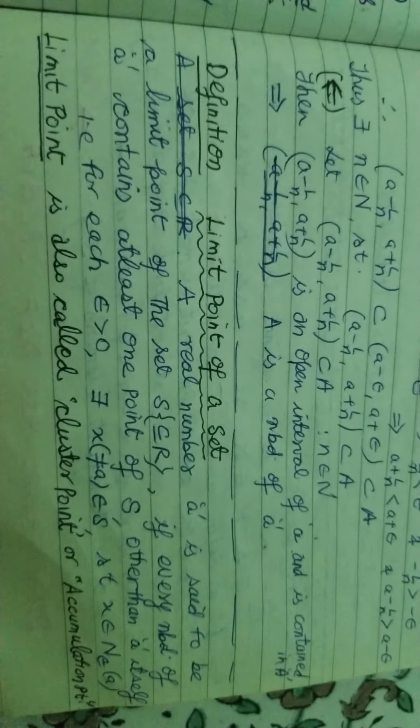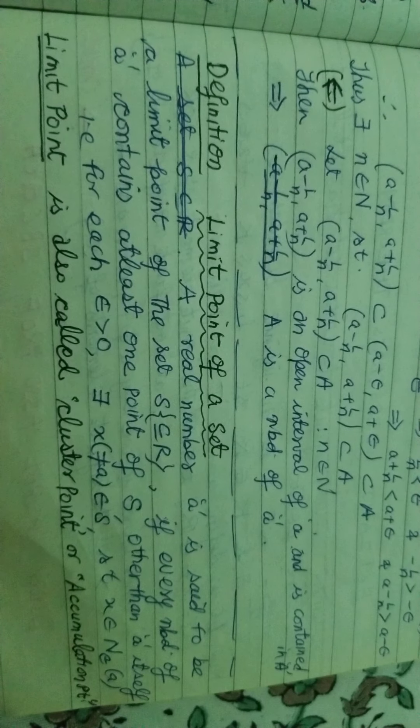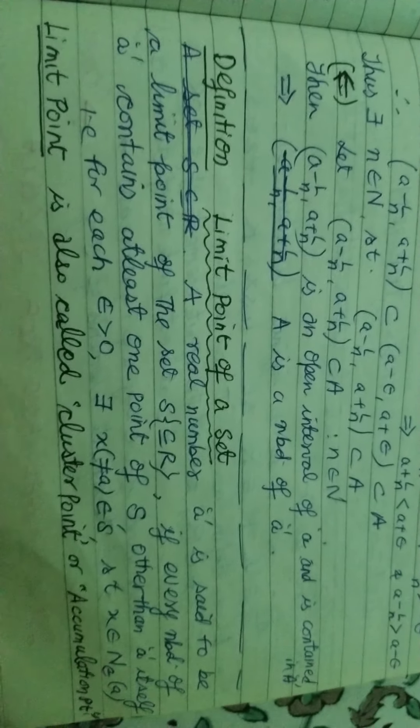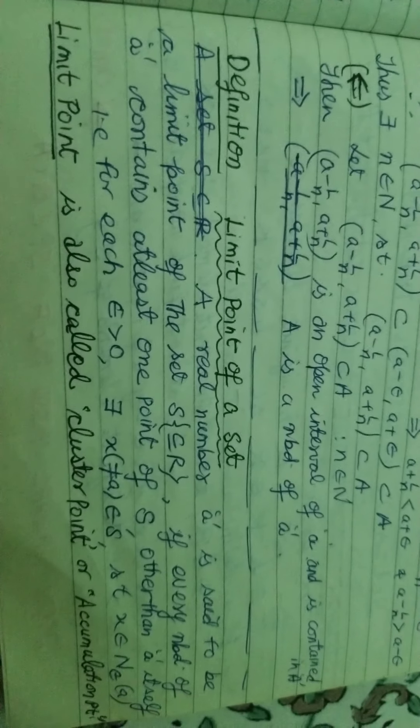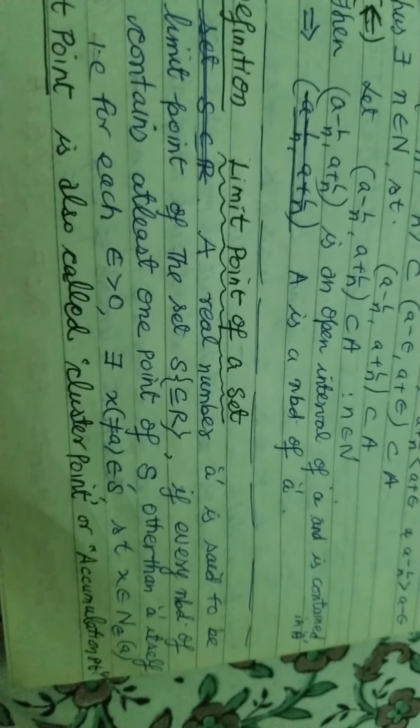Today we discuss the point properties of a set, i.e., limit point of a set. A real number A is said to be a limit point of the set S, which is a subset of R (the set of real numbers), if every neighborhood of A contains at least one point of S other than A itself. That is, for each epsilon greater than 0, there exists x not equal to A belonging to S such that x belongs to a neighborhood of A.